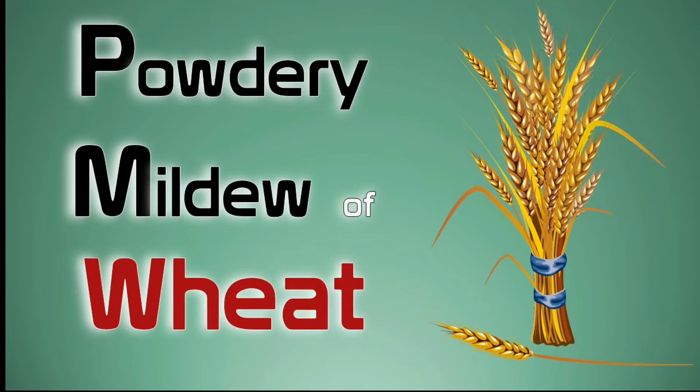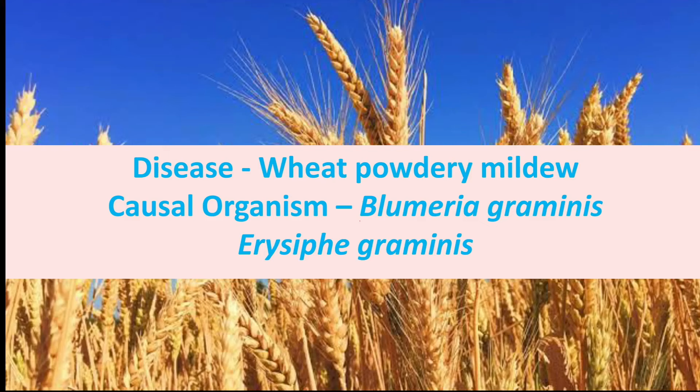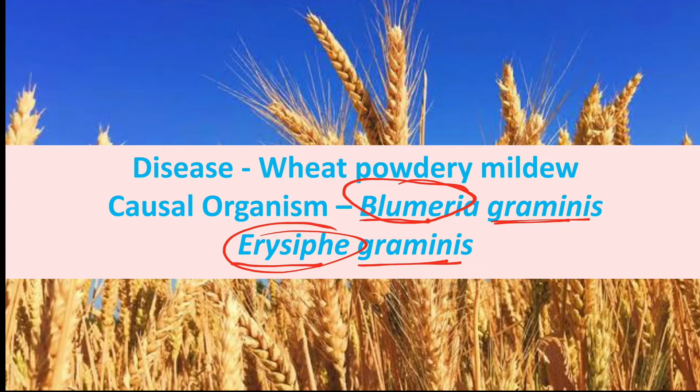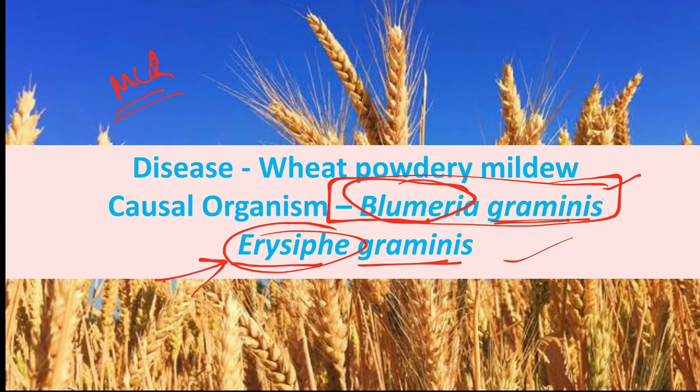Powdery mildew of wheat is caused by Blumeria graminis, earlier known as Erysiphe graminis. For MCQs, if both options are given, Blumeria graminis is more correct; but for theory writing, Erysiphe graminis is also acceptable.